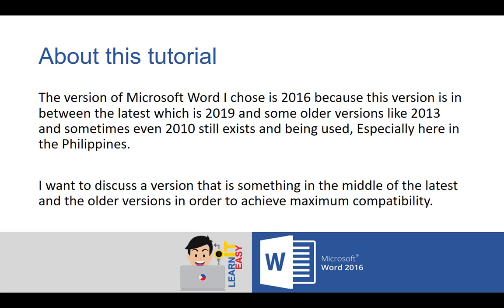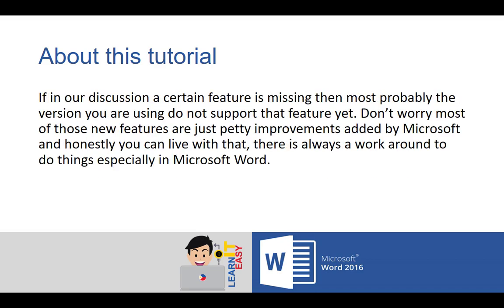The version of Microsoft Word I chose is 2016 because this version is in between the latest version, which is 2019, and some older versions like 2013 — and sometimes even 2010 — which still exist and are being used, especially here in the Philippines. I want to discuss a version that is in the middle of the latest and the older versions in order to achieve maximum compatibility. If in our discussion a certain feature is missing, then most probably the version you are using does not support that feature yet.